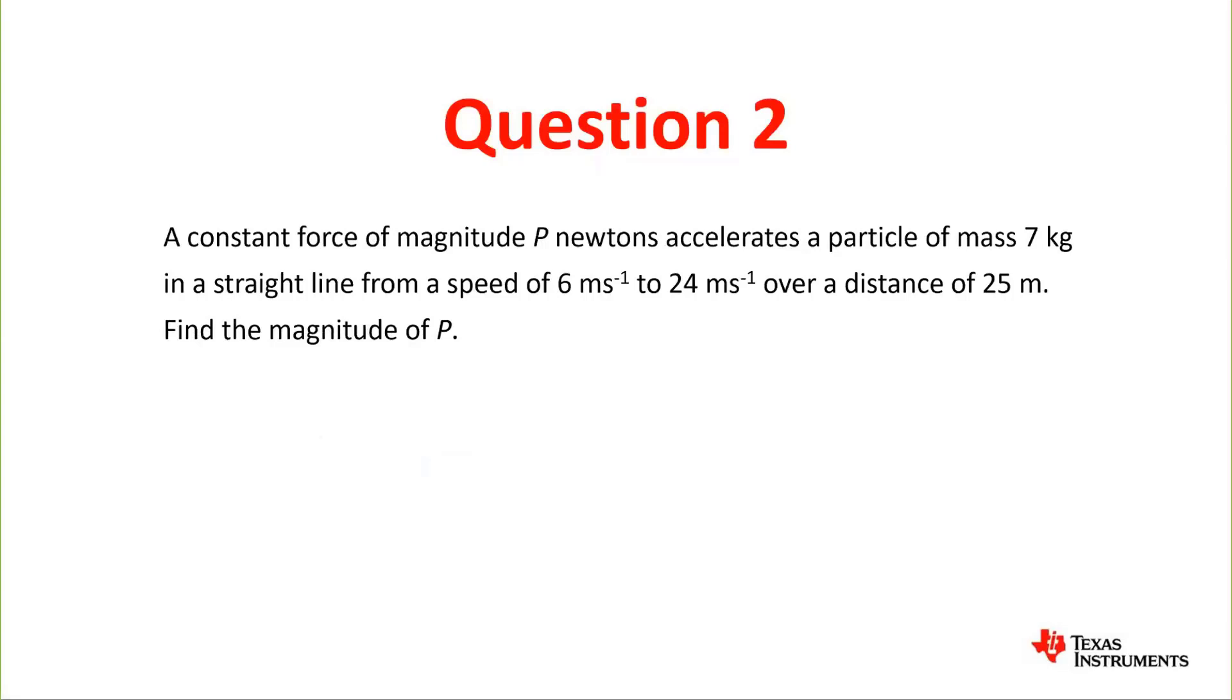Question two: A constant force of magnitude p newtons accelerates a particle of mass 7 kilograms in a straight line from a speed of 6 meters per second to 24 meters per second over a distance of 25 meters. Find the magnitude of p.